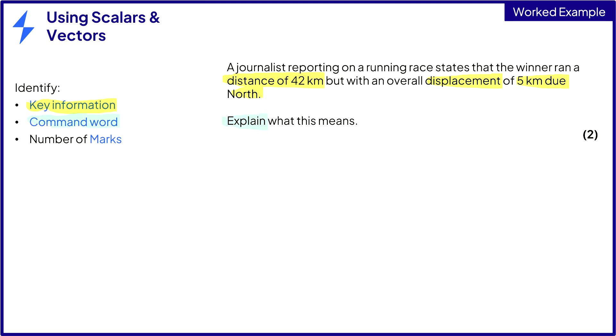Explain what this means. For two marks, then we need to make two statements for our answer. A distance of 42 kilometers means that the race was 42 kilometers long. This is the first mark.